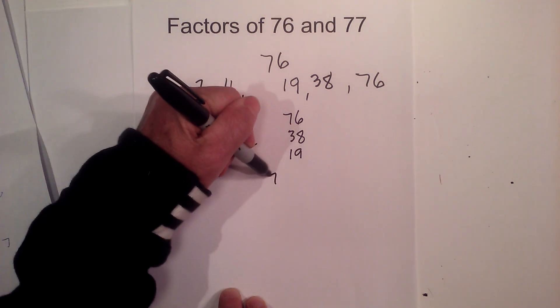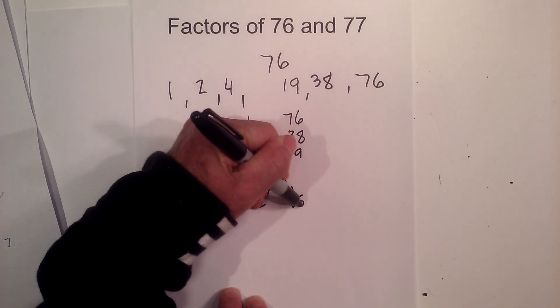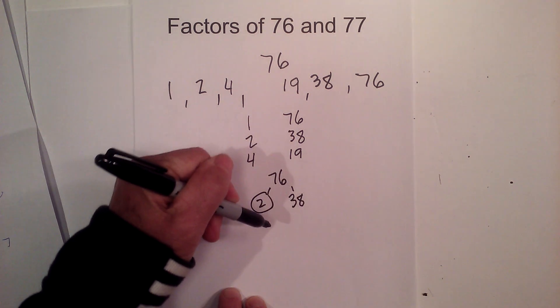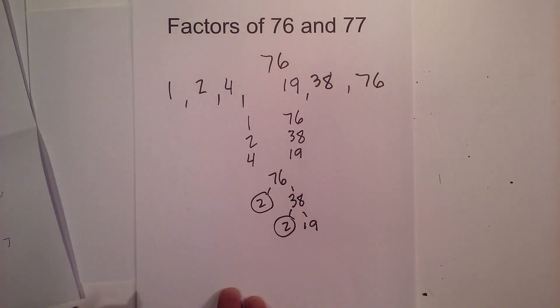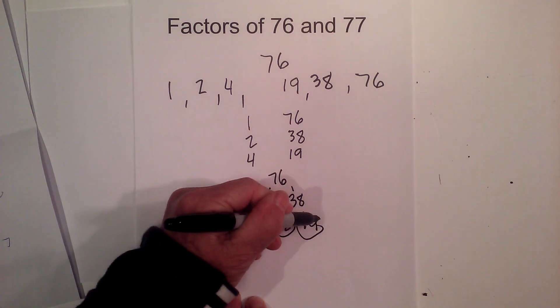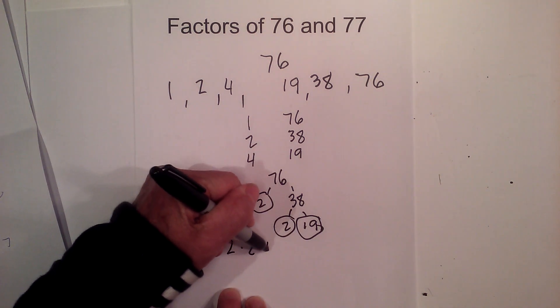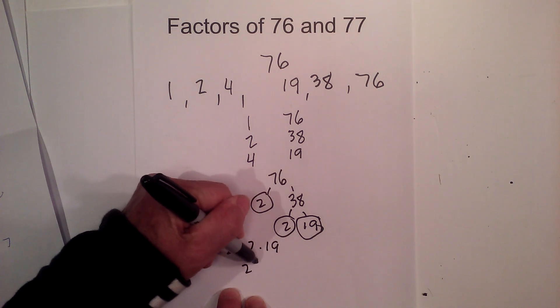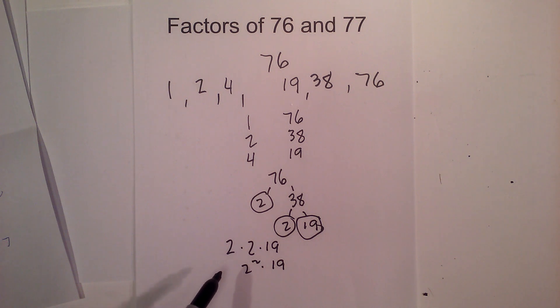If we complete a factor tree of 76, you can go 2 times 38, and then we can go 2 times 19 equals 38. Circle the 2 because it is prime, and the 19 because it is prime. A little messy there. So we have 2 times 2 times 19, or 2 squared times 19. So there are the factors of 76 and the prime factorization of 76.